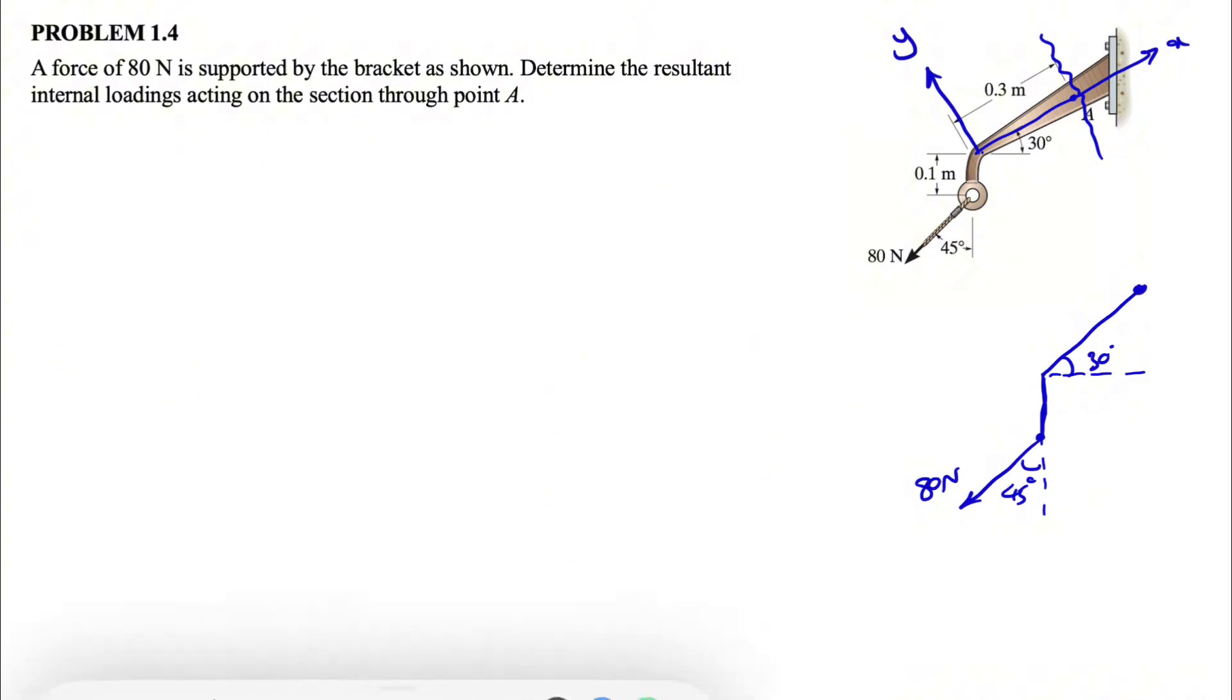I'm going to show the reactions that we have at point A in different colors. We can consider one X component, one Y component, and we're going to consider a moment MA as well, which shows we have three unknowns at point A in total. Since we are in equilibrium, we can use our equilibrium equations: sum of all forces equal zero, and same for the moment.